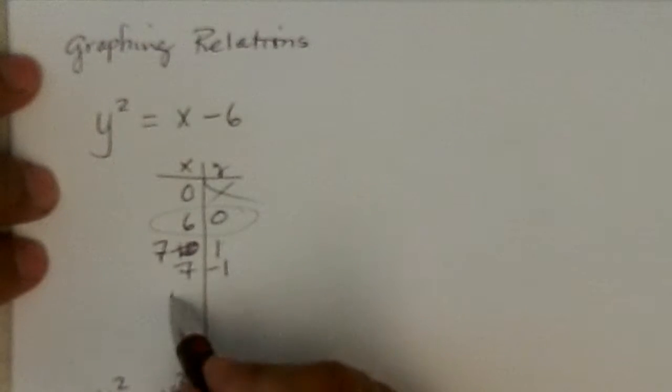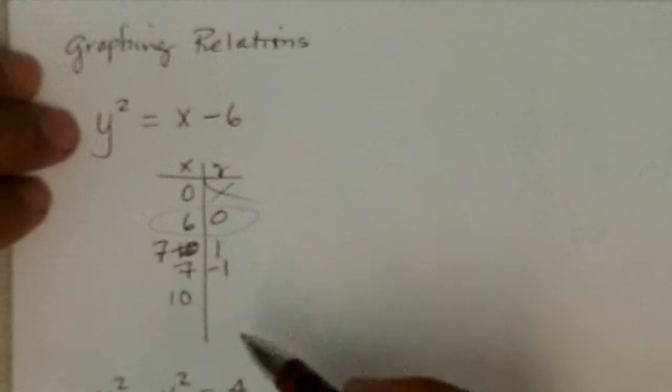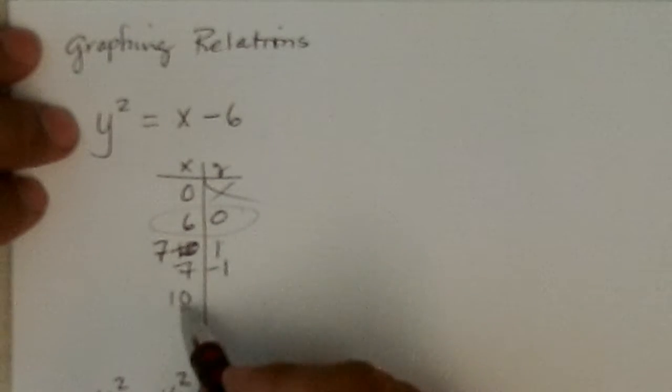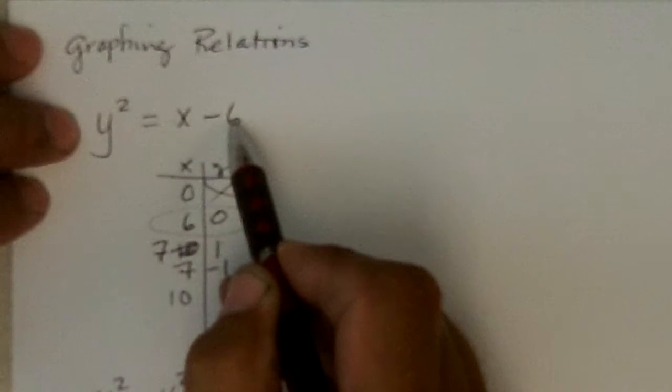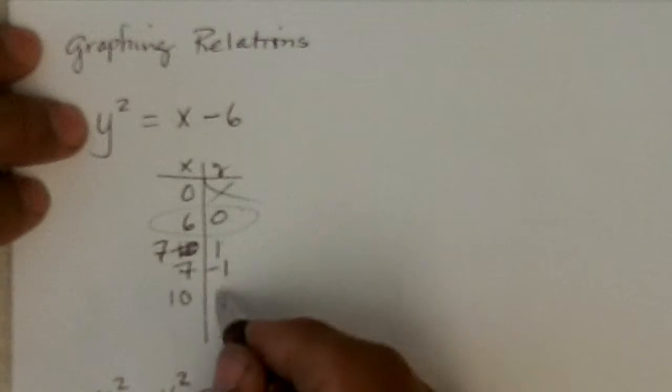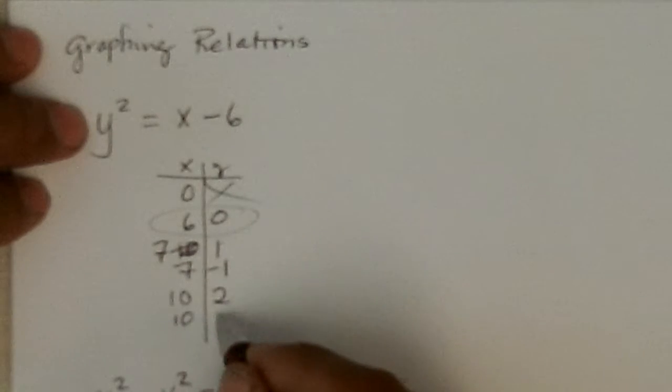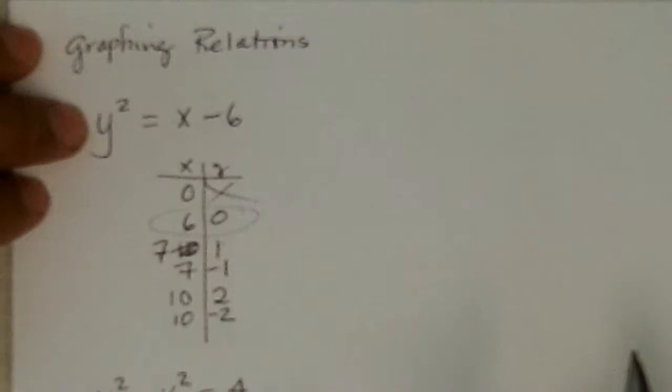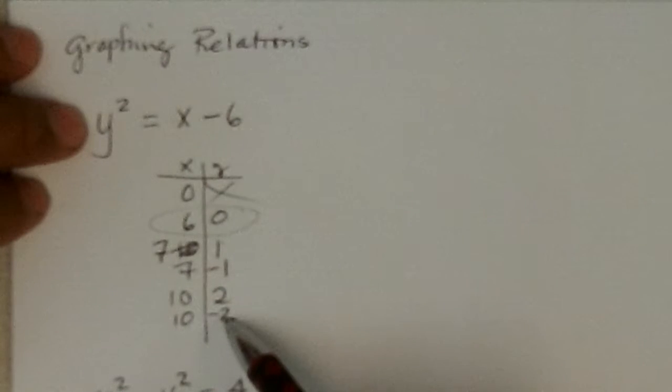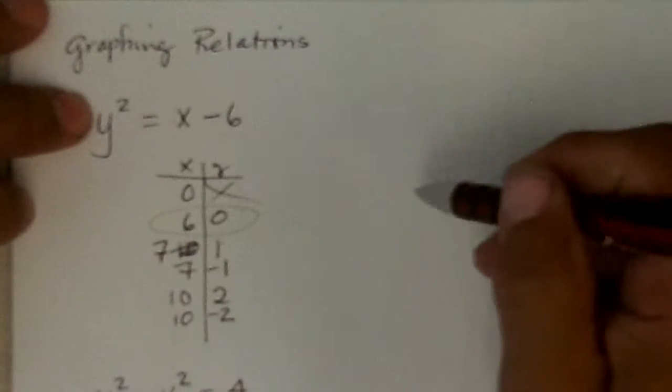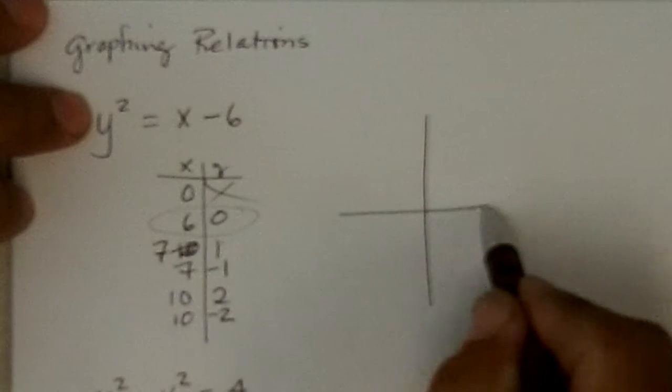Now, if I put in 10, if I put 2 and 3, I get square roots of funny numbers. But 10 minus 6 is 4. What squared is 4? That would be 2, or minus 2. So you can see it's doing both positive and negative things for the y, so that's going to be symmetric with the x-axis.